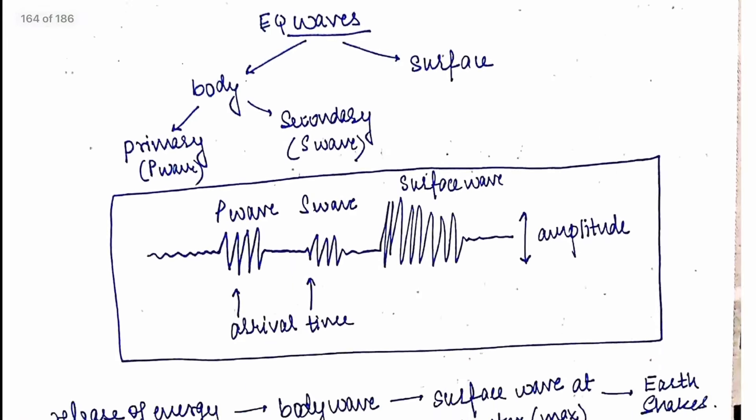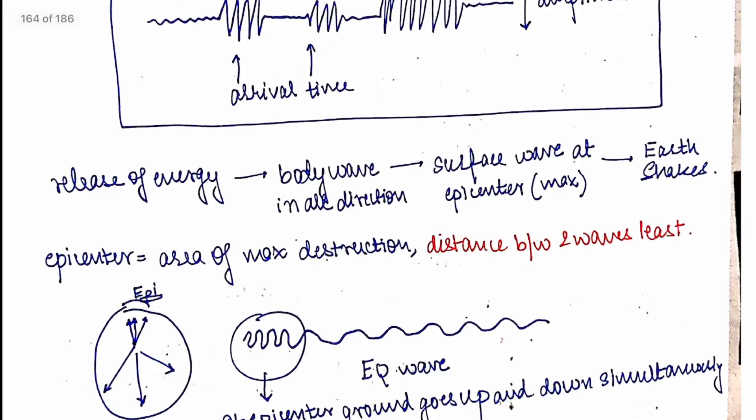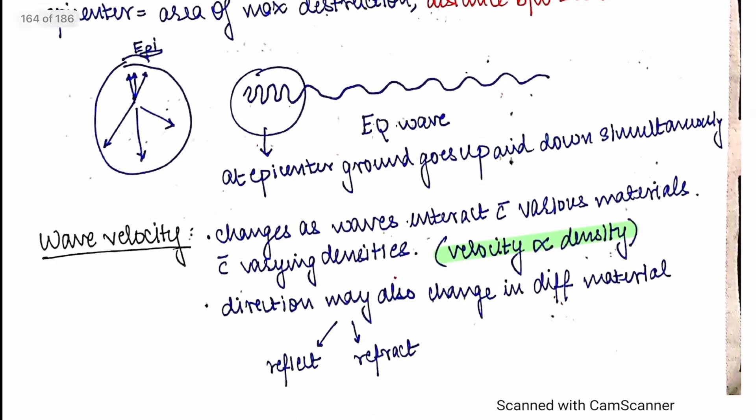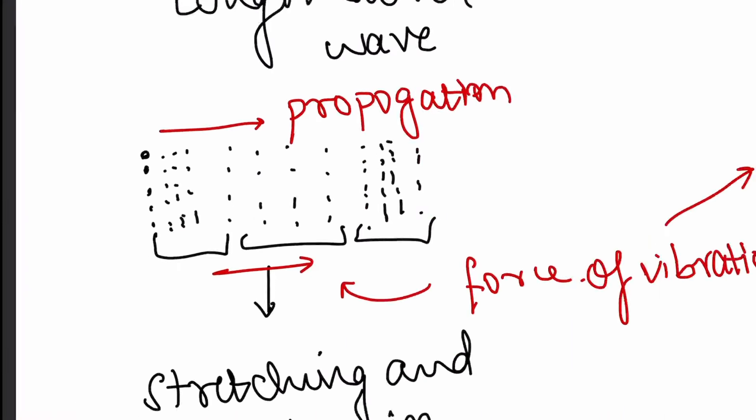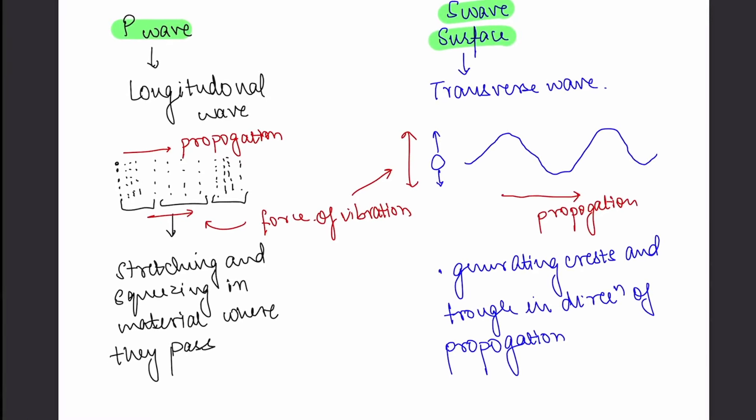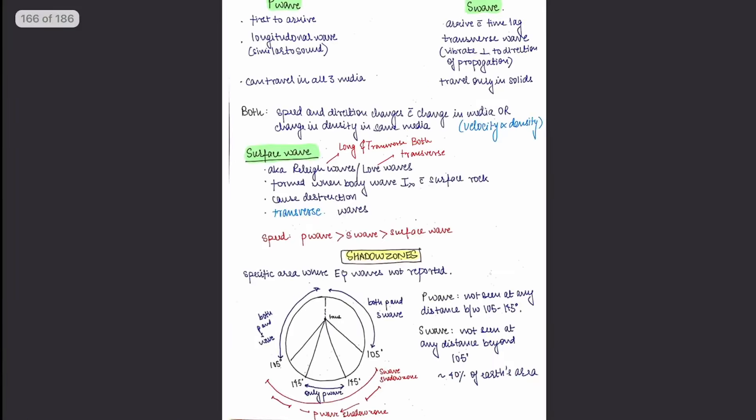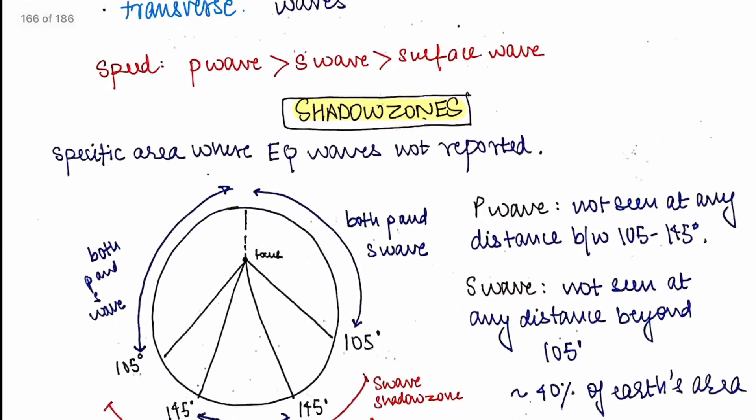Then we talked about earthquake waves - P, S and surface waves. This is given in the NCRT. But there are some points here which are only given in GC-Liong. So combine both and put them together in one note. Like here the difference between P wave and surface wave is explained.